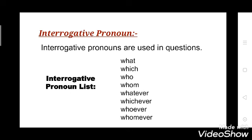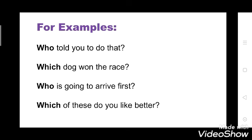Now moving to interrogative pronouns. Interrogative pronouns are used in questions — these are those pronouns with which we ask questions. The question words are: what, which, who, whom, whatever, whichever, whoever, whomever. Examples: who told you to do that? Which dog won the race? Who is going to arrive first? Which of these do you like better? So who and which are interrogative pronouns — they ask questions.